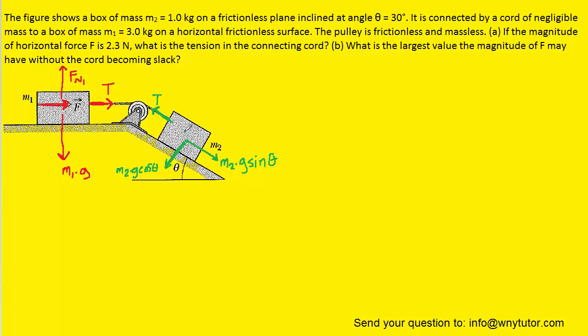And then finally, we have a normal force pushing up on the second box. Notice it's perpendicular to the surface. So if we were to extend that normal force, it would form a right angle with the surface, and we can label that normal force F sub N2.